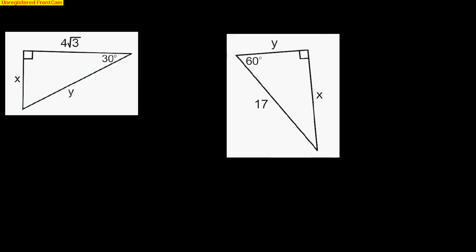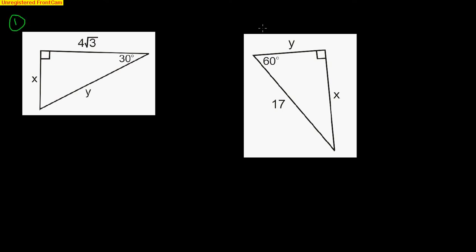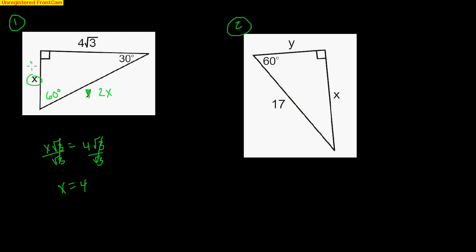Let's look at the first two 30-60-90 examples. In example 1, we can see this is 60 degrees here, so across from the 30 is X, the short side. The side across from the 60 is always X√3. So X√3 = 4√3, because that's the given side. Divide both sides by √3, they cancel, and X = 4. That means the short leg is 4, and the hypotenuse is always double that, so 2 × 4 = 8.